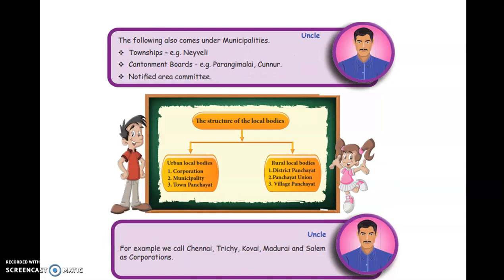Other bodies that command municipalities include township — for example, Navy Valley — and cantonment boards — for example, Parangi Malai — and Kannur notified area committees. The local bodies are divided into two: urban local bodies, which include corporation, municipality, and town panchayat; and rural local bodies, which include district panchayat, panchayat union, and village panchayat.